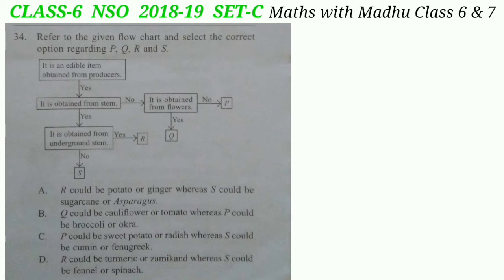According to the flowchart, R could be potato or ginger as they have modified underground stems. S could be sugarcane or asparagus as they are stems grown above the ground. Cauliflower and broccoli are flowers; tomato and okra are fruits; sweet potato and radish are modified roots; cumin and fennel are seeds. The correct answer is option A — R could be potato or ginger, whereas S could be sugarcane or asparagus.